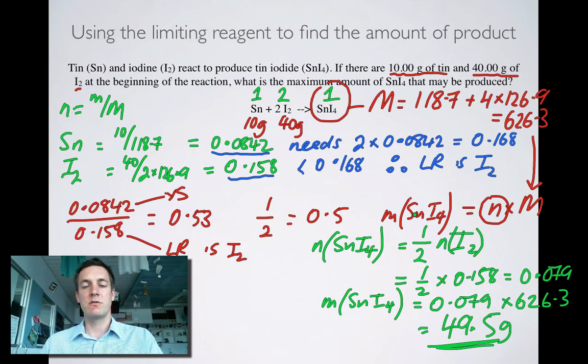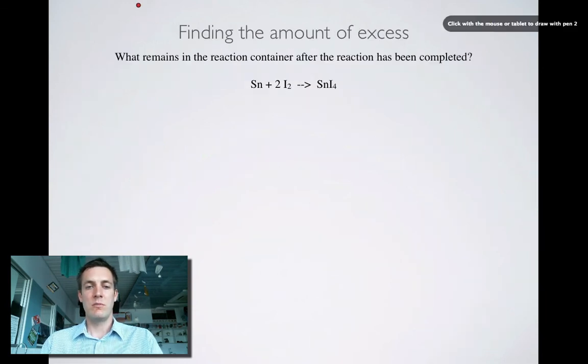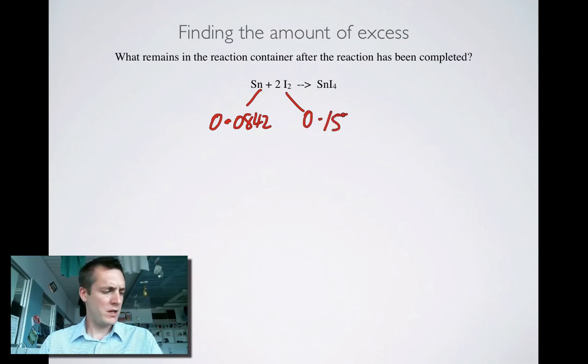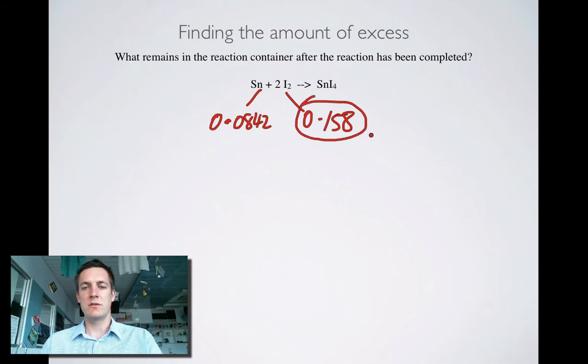Now the next part of the problem, as I said, is to find out how much excess material there is left over. Okay, I'm actually going to need these two numbers here in the next part of the calculation. Alright, but I've actually got to rub all this out, sadly. So here we go. Here's the next stage. Just to remind ourselves, we had 0.0842 moles of that, and 0.158 moles of that. And we decided that this was the limiting reagent.